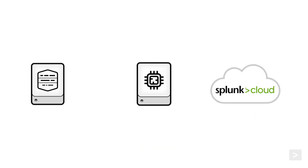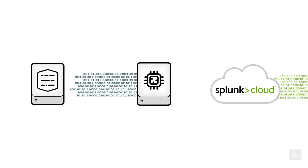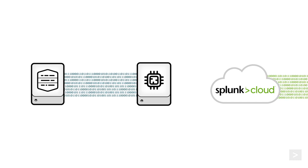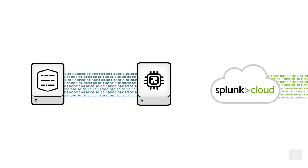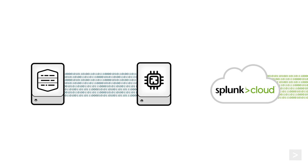Leveraging Edge Processor at ingest, administrators can filter at ingest for Windows 4688 events that contain the required fields, sending them separately to Splunk ES Cloud for BA detection.